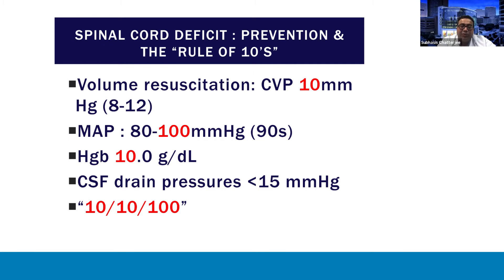We have developed a concept called the rule of 10s, which is a rough guide for resuscitation. From a volume resuscitation standpoint, aim for a CVP somewhere in the 10 range — or using point-of-care echo or PA diastolic pressures in the 14 range. Next is a mean arterial pressure close to 100, aiming for the high 90s if possible. A hemoglobin postoperatively in the 10 range is targeted to maximize oxygen delivery to the spinal cord. A CSF drain pressure between 10 to 15. Multiple combinations of 10 add up to 100 — something junior trainees, nurses, and APCs can easily remember as a guide every time they see the patient.